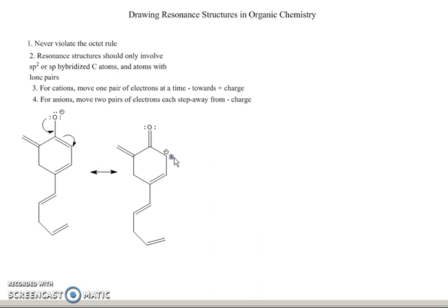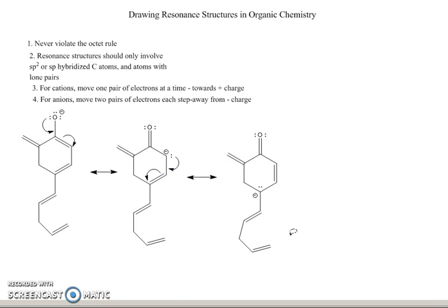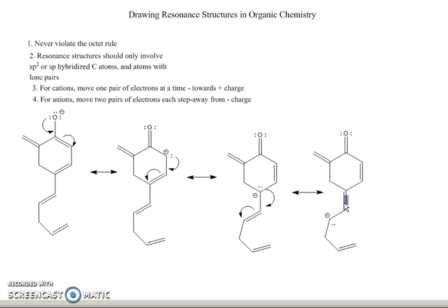We're going to do the same thing again. This lone pair is going to move here to become a double bond, and this double bond is going to move onto this carbon to become a lone pair, as shown by these arrows. And if I draw the product, I get this — this lone pair has become a double bond, and this double bond has become a lone pair. So now I do the same thing again: this lone pair moves here to become a double bond, and this double bond moves to this carbon to become a lone pair, giving me this resonance structure.